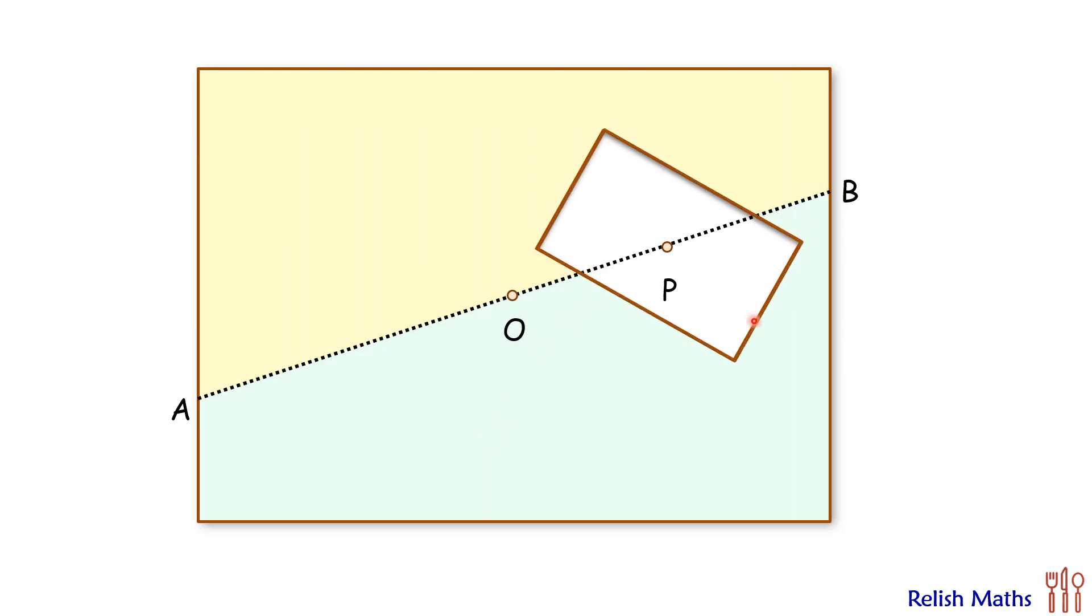Also for this cut out piece of rectangle, this line is passing through the center P as well. So this line will divide this cut out piece of rectangle into two equal areas.